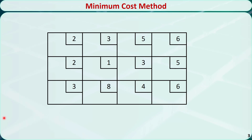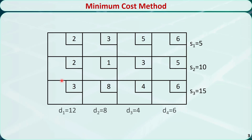For example, this is a transportation tableau. The unit transportation cost is shown in the top right corner of each cell, like 2, 3, 5, 6, and so on. The total supply for the first row is 5, for the second row is 10, and so on. The total demand for the first column is 12, for the second column is 8, and so on.